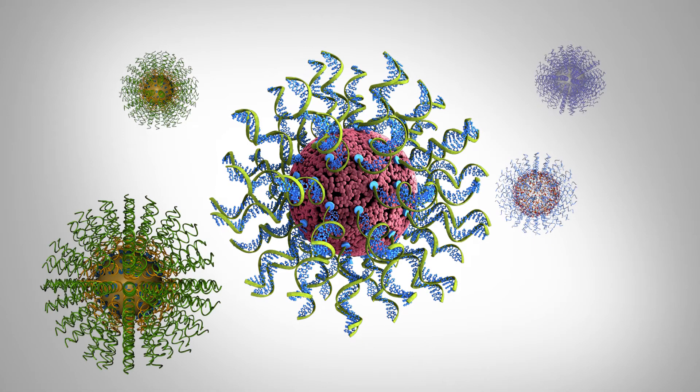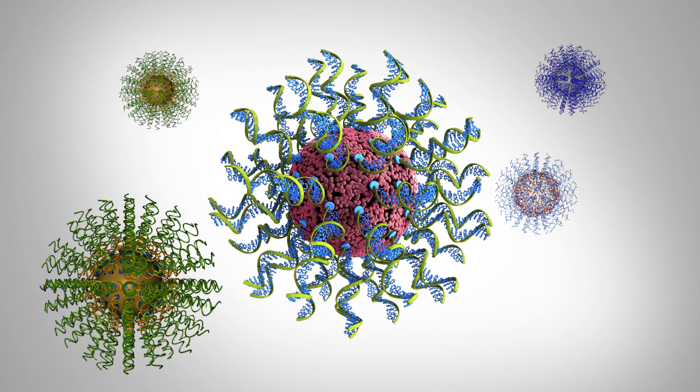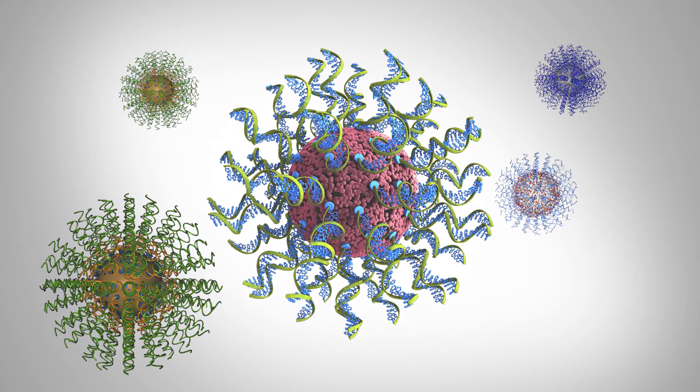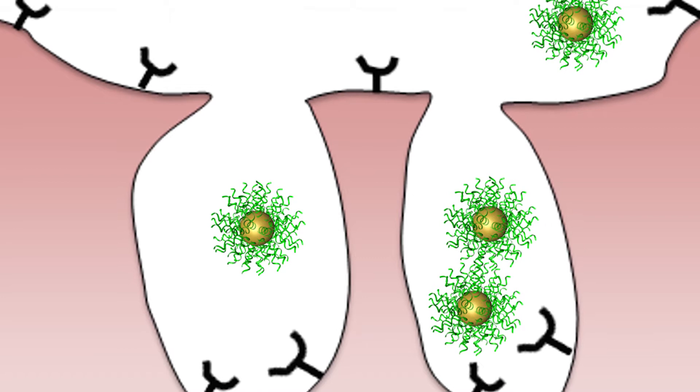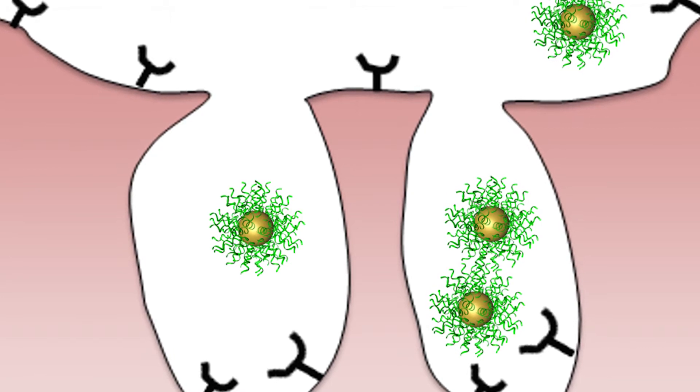Here's how spherical nucleic acids work with respect to creating cancer vaccines. We know that these types of structures are taken up by cells, including immune cells, and they're internalized via a process called endocytosis. Many of the toll-like receptors that one would like to engage to regulate the immune system are in the walls of endosomes.